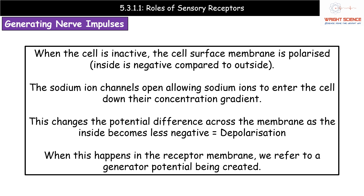When the sodium ion channels open, sodium ions re-enter the cell by moving down the concentration gradient. As sodium ions enter the cell, they change the potential difference across the membrane — the inside becomes less negative because more positive charges are going in. This process is called depolarisation, because we're reducing that charge difference across the polarised membrane. Once depolarisation occurs on the membrane, we generate what is termed a generator potential.